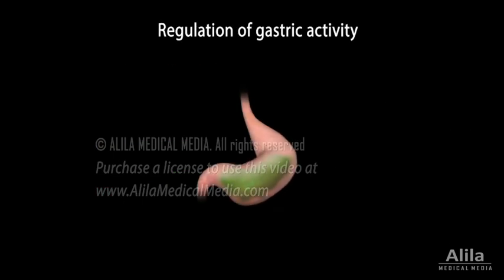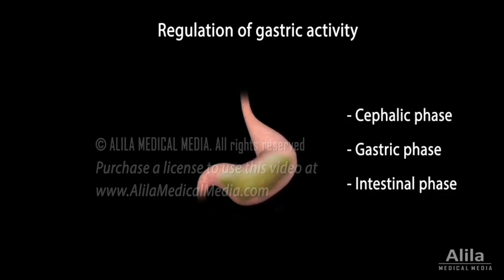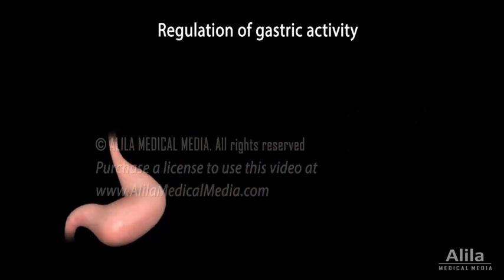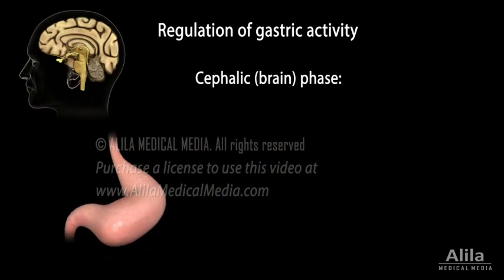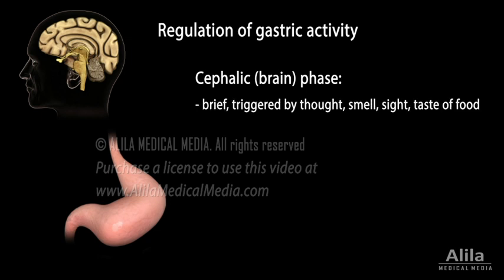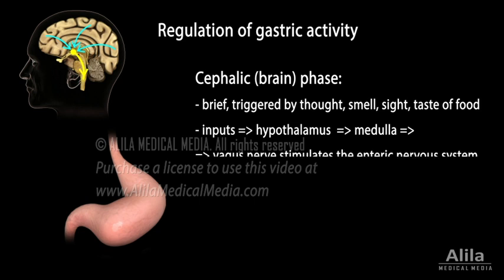Gastric activity is under both neural and hormonal control, and occurs in three phases which overlap and can happen simultaneously. The cephalic phase starts before food reaches the stomach. It is triggered by the thought, smell, sight, or taste of food. These inputs act on the hypothalamus, which relays the information to the medulla. Vagus nerve fibers from the medulla then stimulate the enteric nervous system to prepare the stomach for digestion.